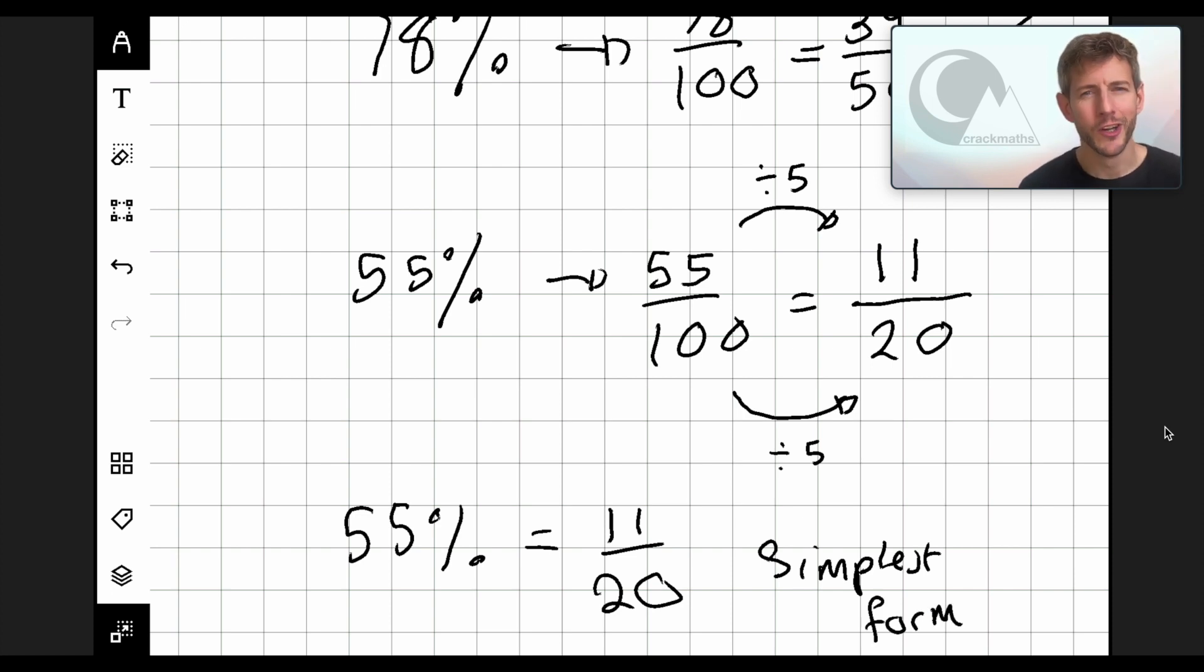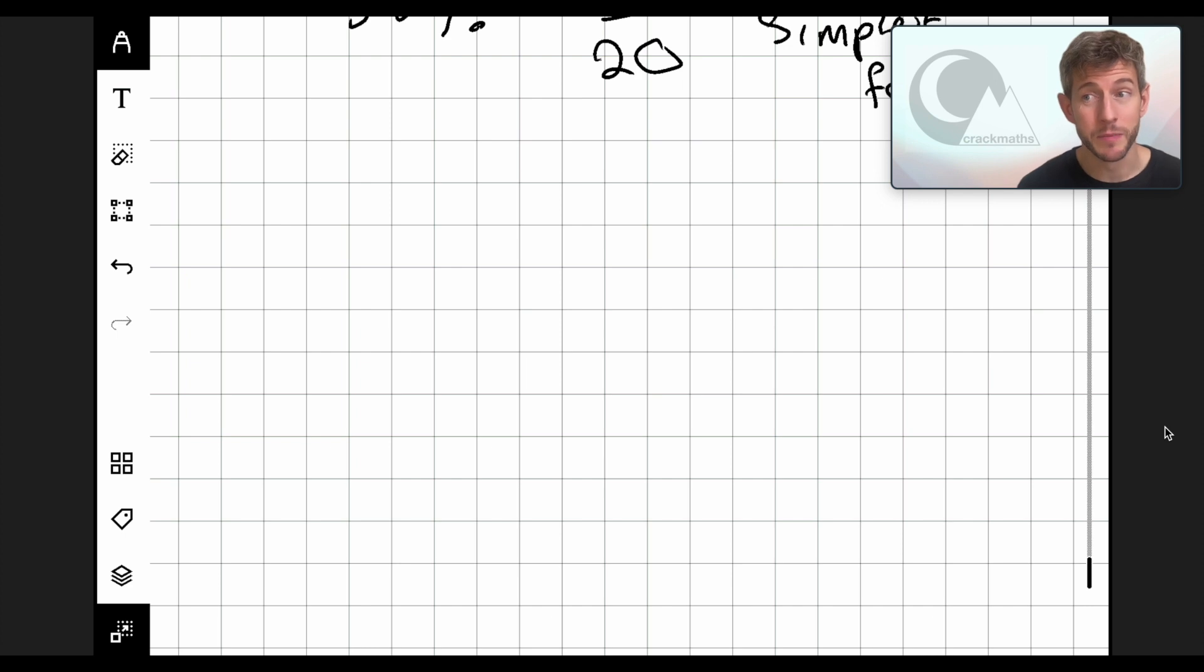Now, let's take a look at converting a percentage into a decimal. So, a percentage into a decimal is best off if you just kind of think about it going through the fraction root. So if we think of 79%, if we remember that this equals 79 over 100.